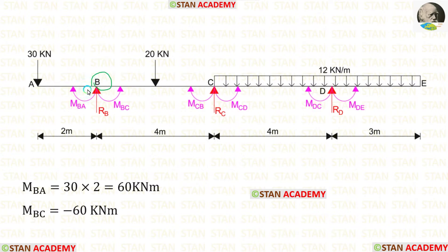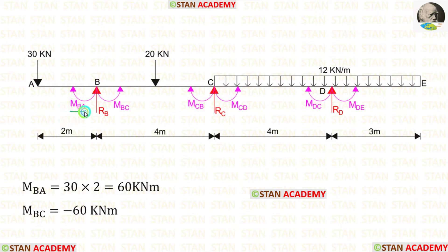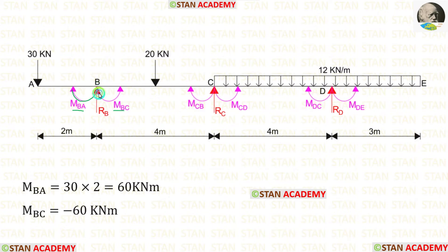In joint B, we can easily calculate the moments MBA and MBC because there is overhanging on the left of B. To calculate MBA, we have to multiply the load with the overhanging distance. When we do that, we get 60 kN·m. MBA should be positive because it is acting in the clockwise direction. MBA and MBC will have the same values, but the sign will be different. MBC should be negative because it is acting in the anticlockwise direction. So for MBC, we are getting minus 60 kN·m.